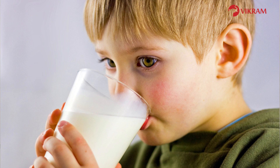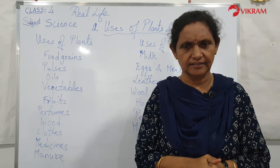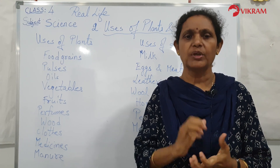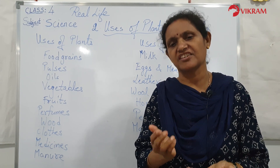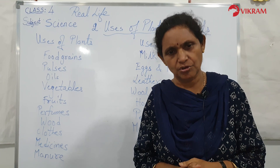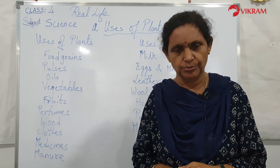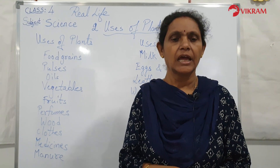Next are eggs and meat. Eggs are obtained from hens and ducks; they are rich in proteins. We get meat from goats and chicken; it is rich in proteins and vitamins.